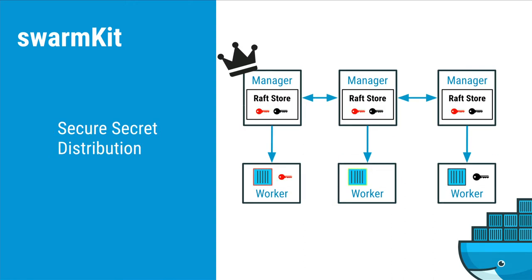One really important feature of SwarmKit is secure secret distribution. Building on the encrypted, authenticated, and authorized communications, we can send secrets only to the nodes that need them — for example, only the red container worker will ever get the red key and will never get the black secret. Secrets are exposed as a file so any framework or language can consume them, but kept only in memory so they're never written to disk. Once the container that needs a secret is done running, the secret is deleted from the node — least privileged secret distribution.